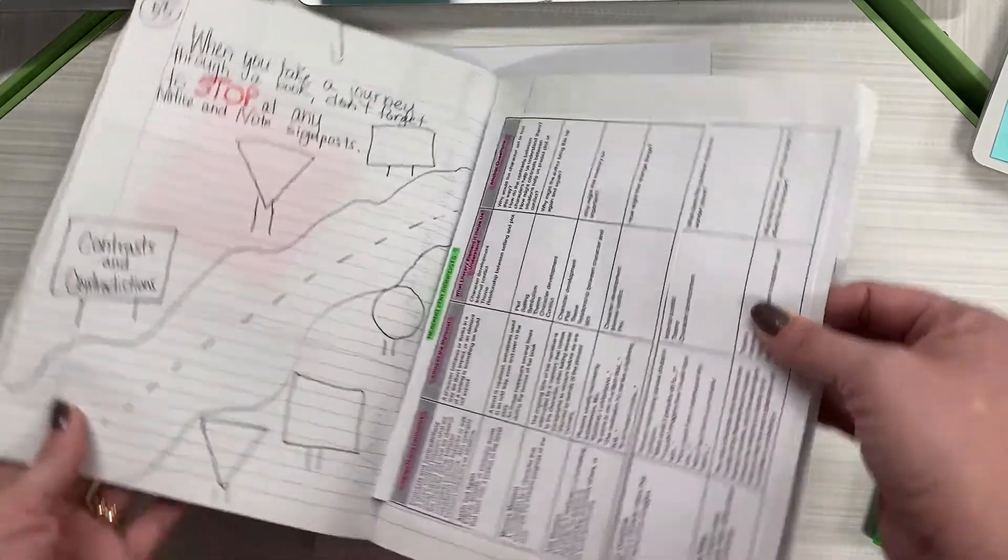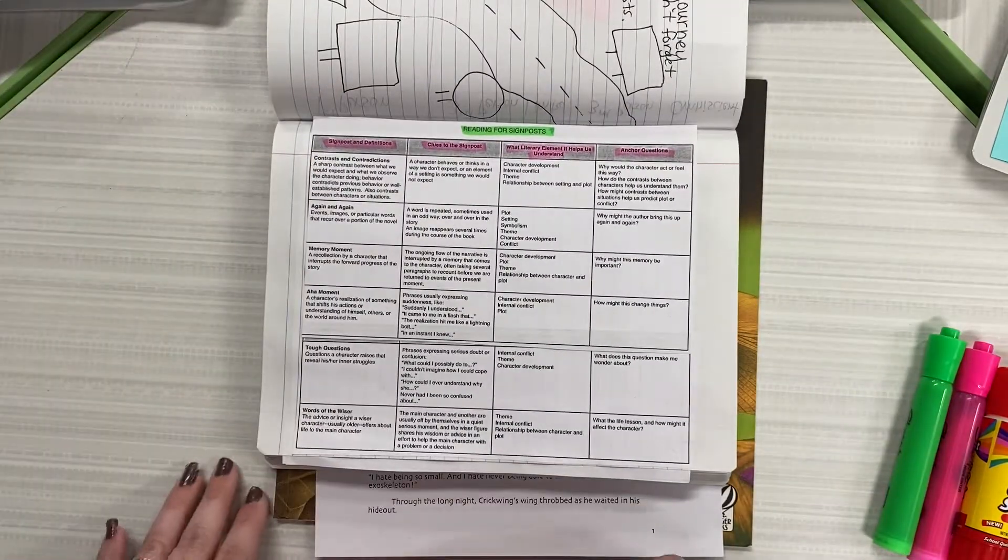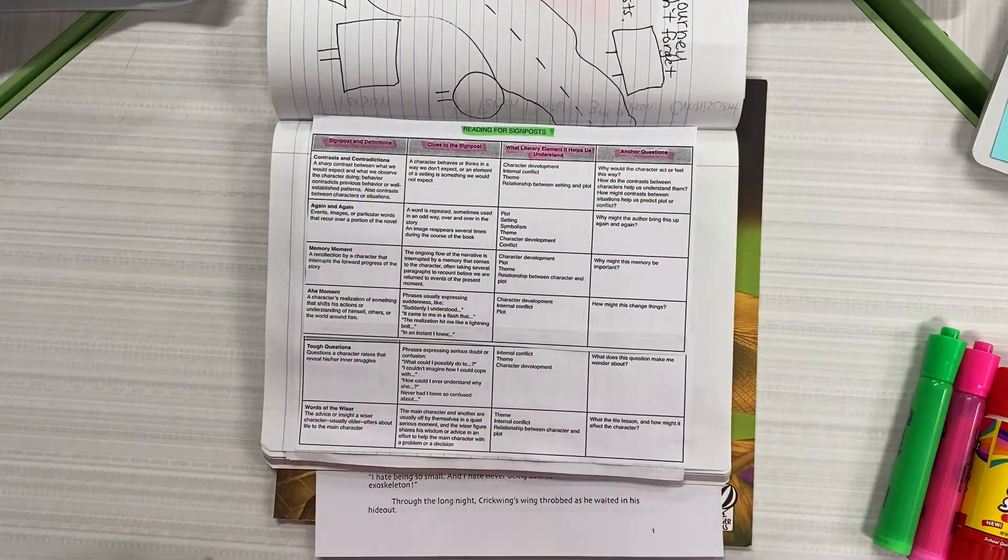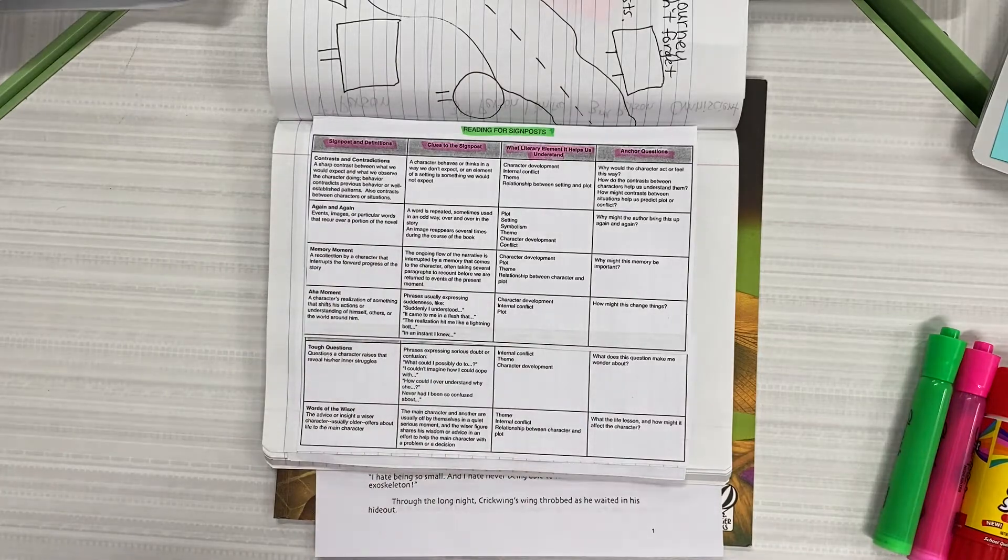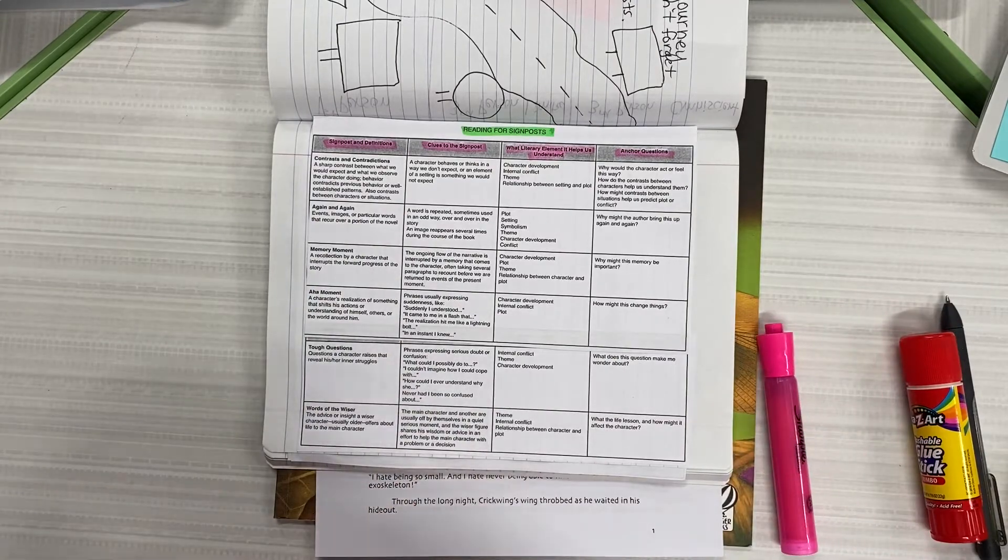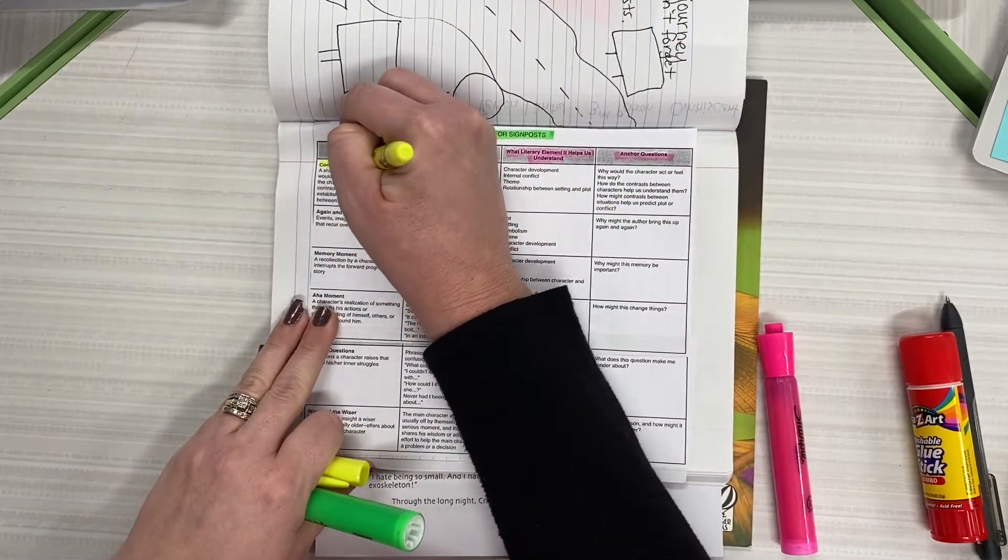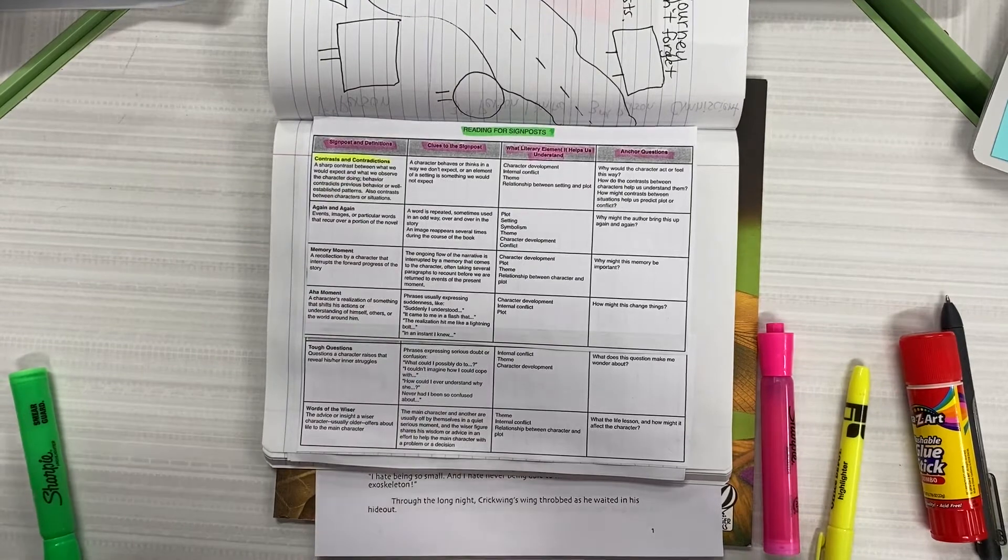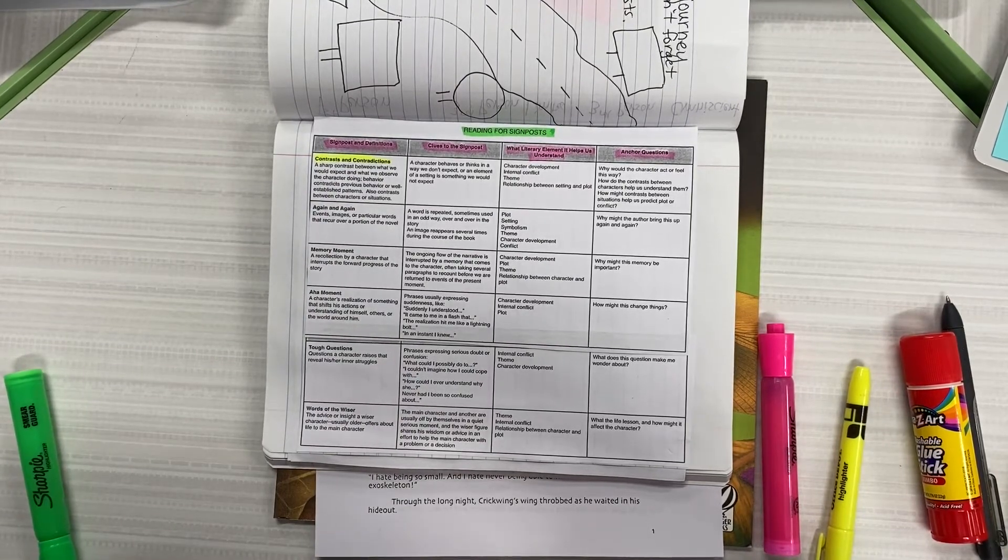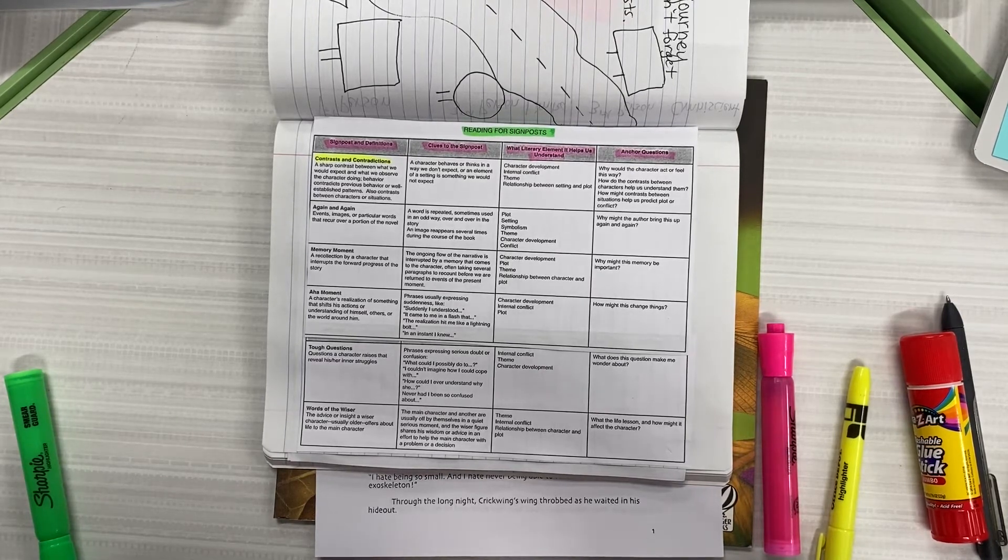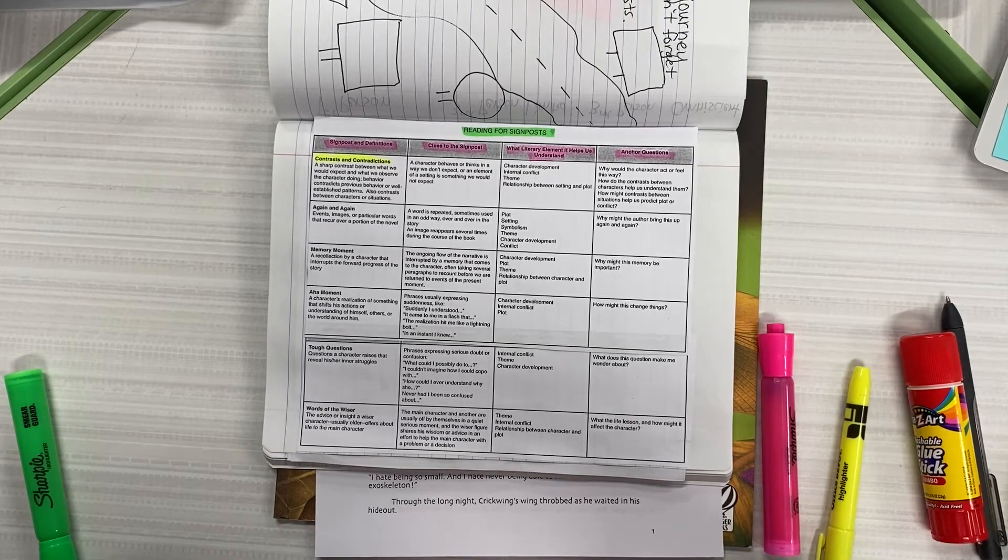Turn the notebook and now look at the chart you were asked to create by taking those two charts, cutting them to fit on one page. We're going to use our highlighter, use yellow, and highlight the signpost called contrasts and contradictions. The definition is a sharp contrast between what we would expect in a character and what we actually observe the character doing. Their behavior contradicts the previous behavior or well-established patterns and also contrast between characters or situations.